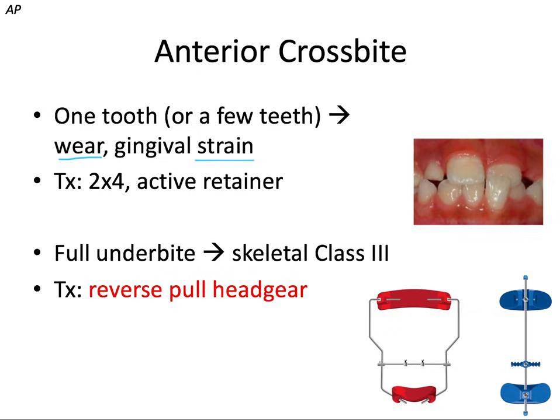We'd probably want to wait until those permanent laterals are in. Another option is using an active retainer with a finger spring. If we have a full underbite, that's due to a class three skeletal growth pattern, often with maxillary deficiency and/or mandibular excess. This can be treated with reverse pull headgear, which tackles the skeletal discrepancy by trying to pull and stimulate the maxilla to grow forward at its sutures. We'll talk more about reverse pull headgear in the next video.